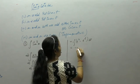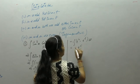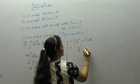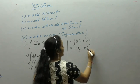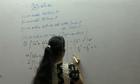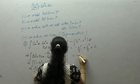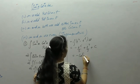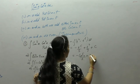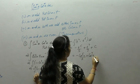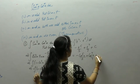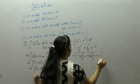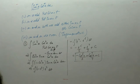Applying the power rule, we integrate term by term. Substituting back t = cos x, the final answer is: −cos⁵x/5 + cos⁷x/7 + c.